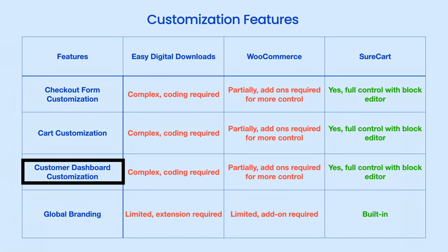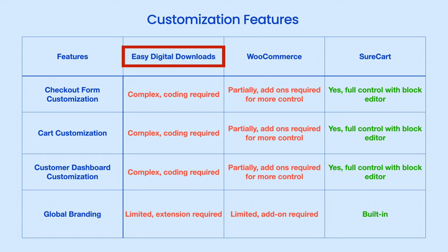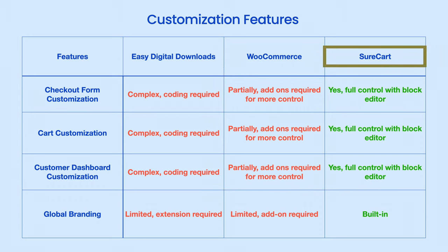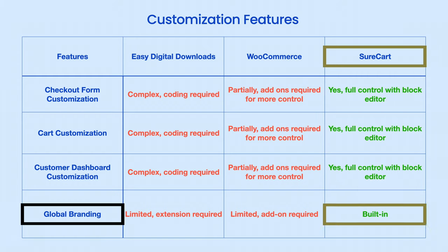For customization features — checkout form customization, cart customization, and customer dashboard customization — Easy Digital Downloads is quite complex and needs coding. WooCommerce allows partial customizations, but add-ons are required for more control. With SureCart, you get full control with the block editor, and global branding is built-in.